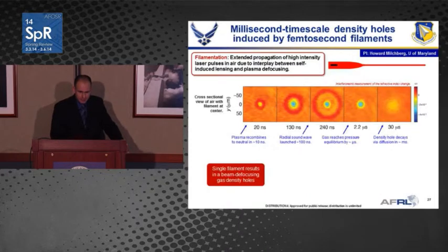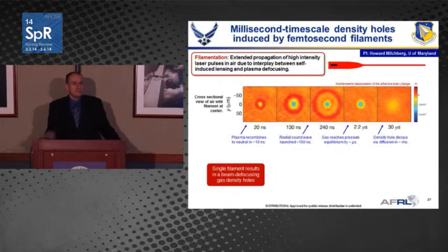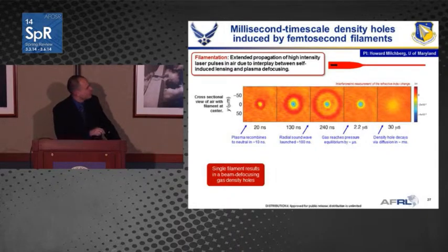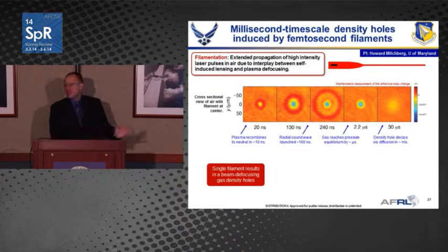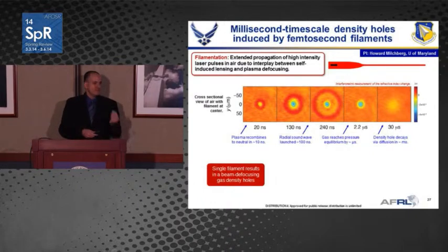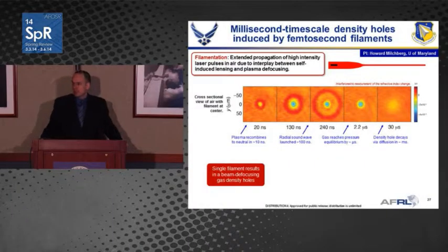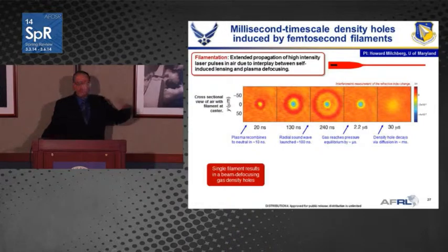My next example is work out of the University of Maryland, where for a long time they've been looking at the propagation dynamics of filaments. In this particular work, they're looking at what happens after the filament has come by. In a series of pictures, you see a filament hitting at the center — the cross section of the beam. The plasma generated recombines extremely quickly within 10 nanoseconds. These filaments deposit a lot of energy very quickly, leaving a gas density hole that hangs around for milliseconds. This gas density hole generally acts as a divergent lens, defocusing any follow-up laser beam.